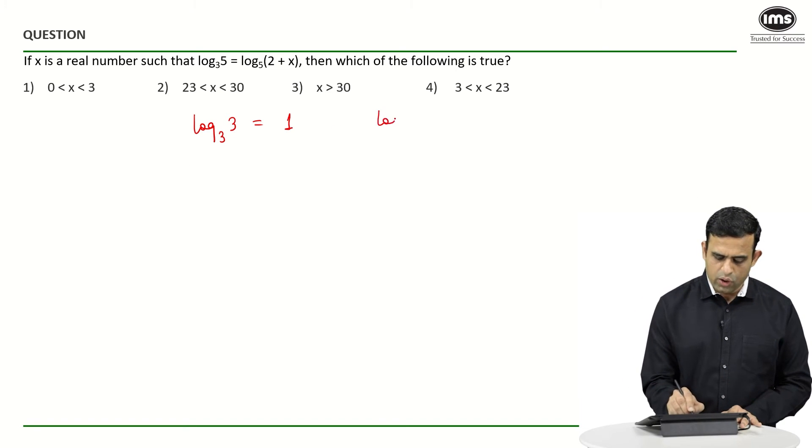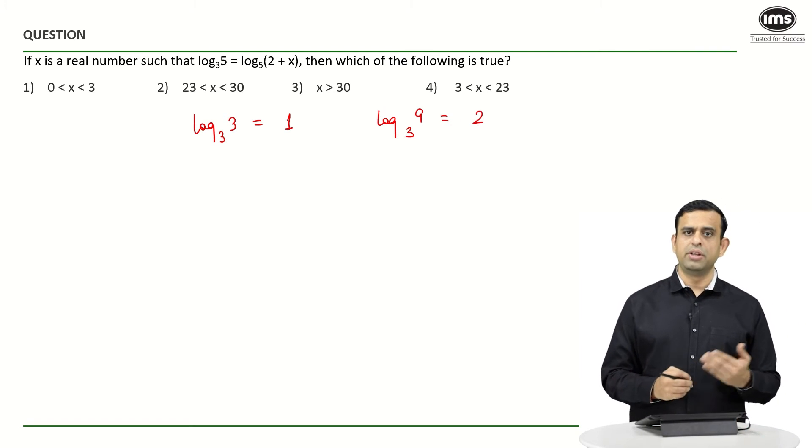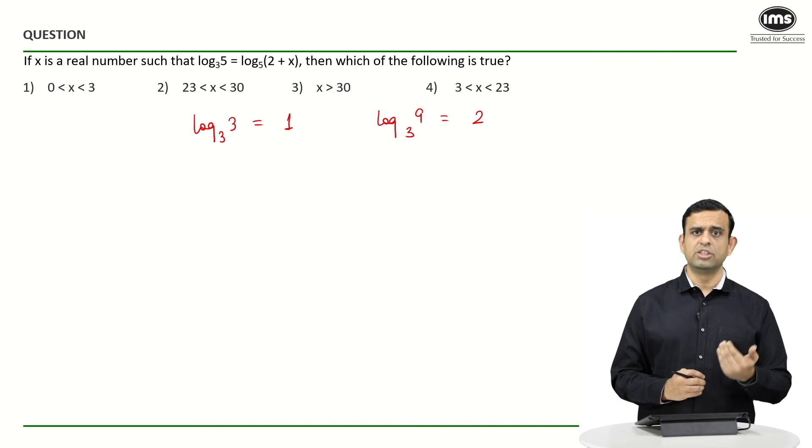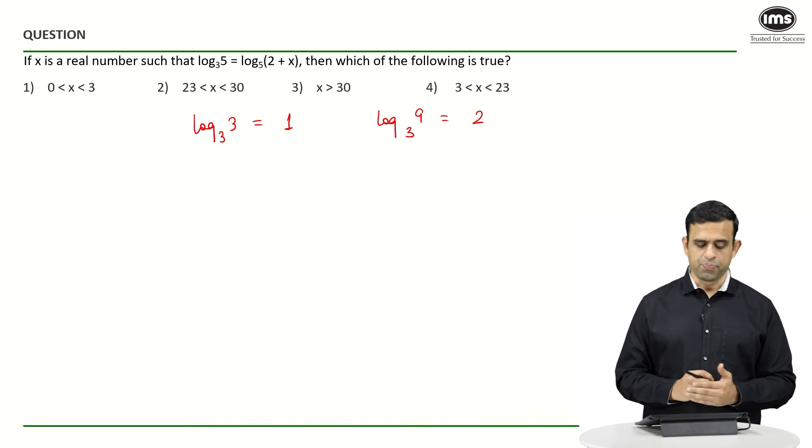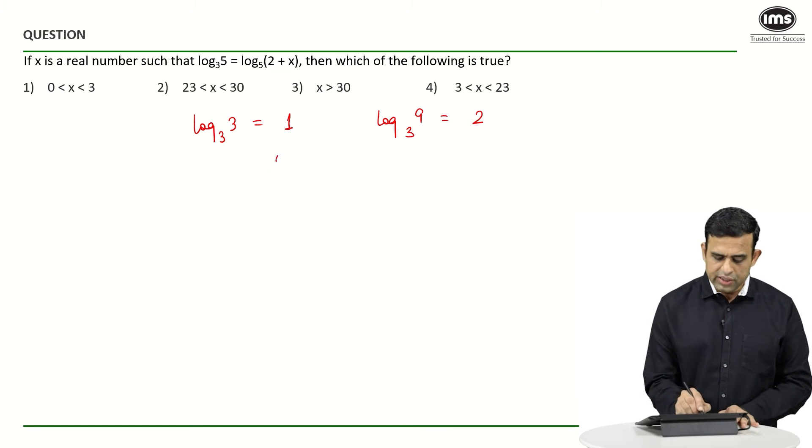Can we say log of 9 to the base 3 will equal 2, since 9 happens to be nothing but 3 squared? So we get 2 times log 3 to the base 3, giving us 2 into 1, which equals 2. So can we say one thing here, that log 5 to the base 3 is going to be between the two numbers?